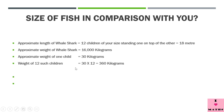We are adding 30 twelve times — that is repeated addition, which is multiplication. So to calculate the weight of 12 children, we multiply 30 by 12. It is easy: 12 threes are 36, and since we are multiplying by 30, a zero comes at the back. So 12 thirties are 360 kilograms.